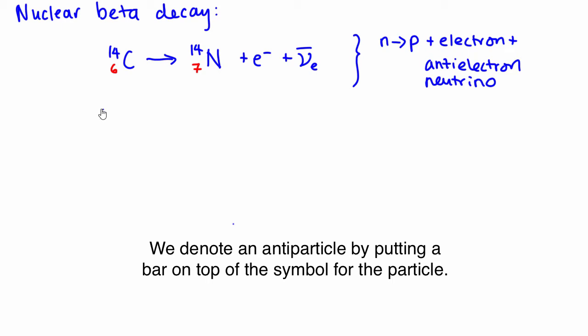Or the other alternative: fluorine-18 becomes oxygen-18, so it changes a proton into a neutron and also produces a positron and an electron neutrino in the process.